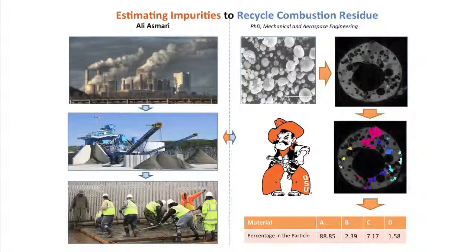The results are put into a table representing the percentage of different materials in the combustion residue we received. We send this back to the cement manufacturers, and it helps them define how much of this combustion residue they need to add to their product to achieve the proper quality.